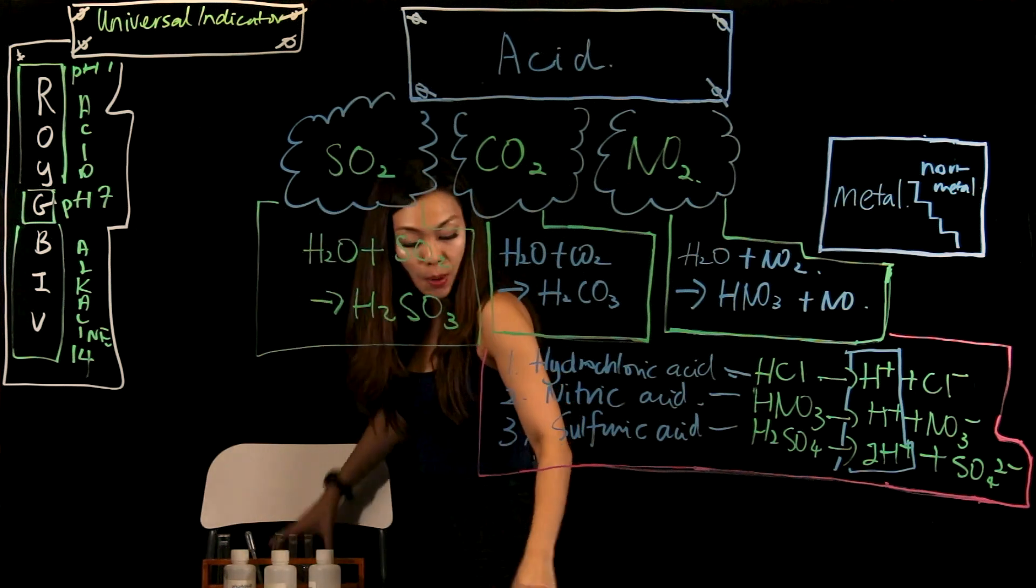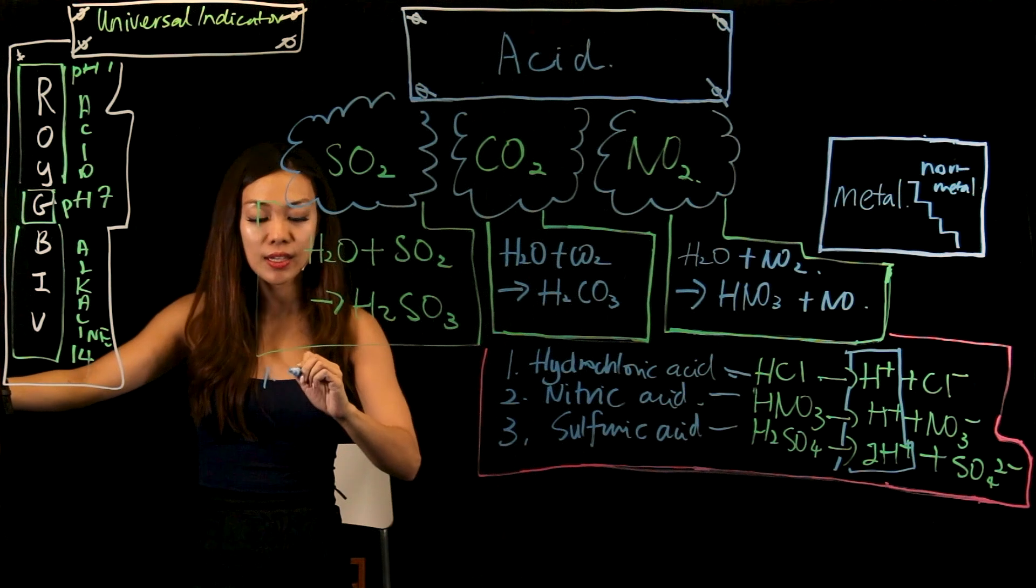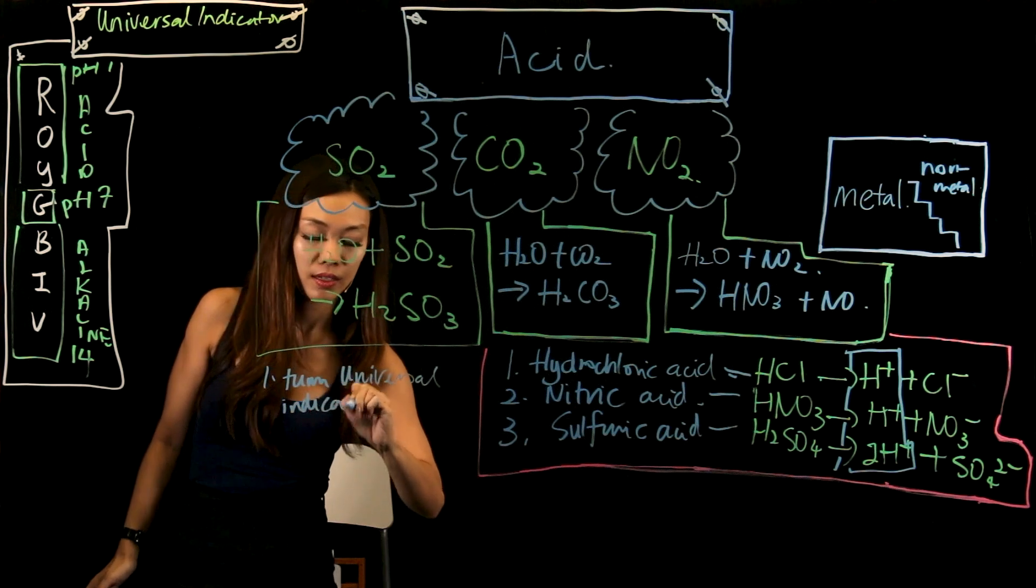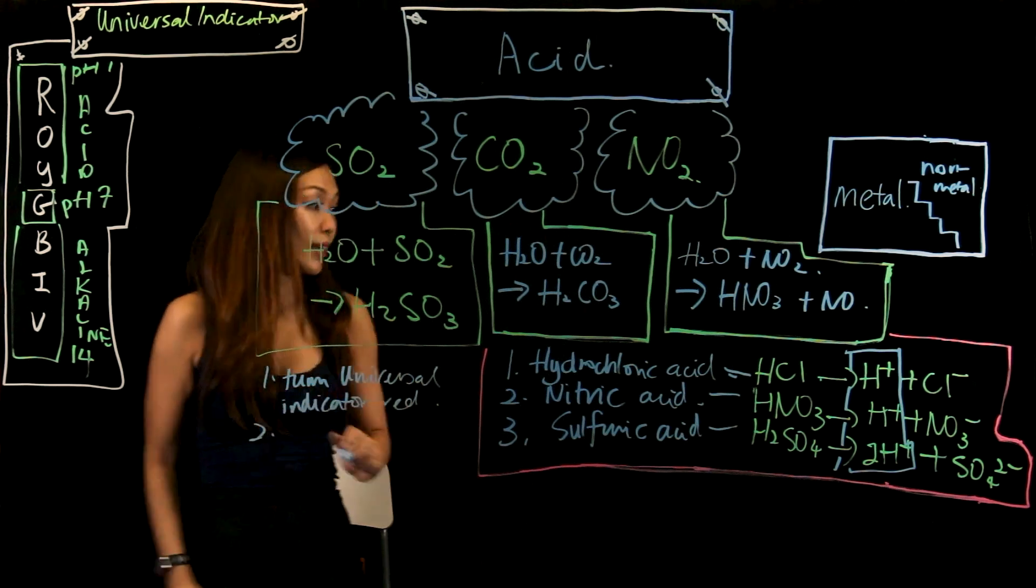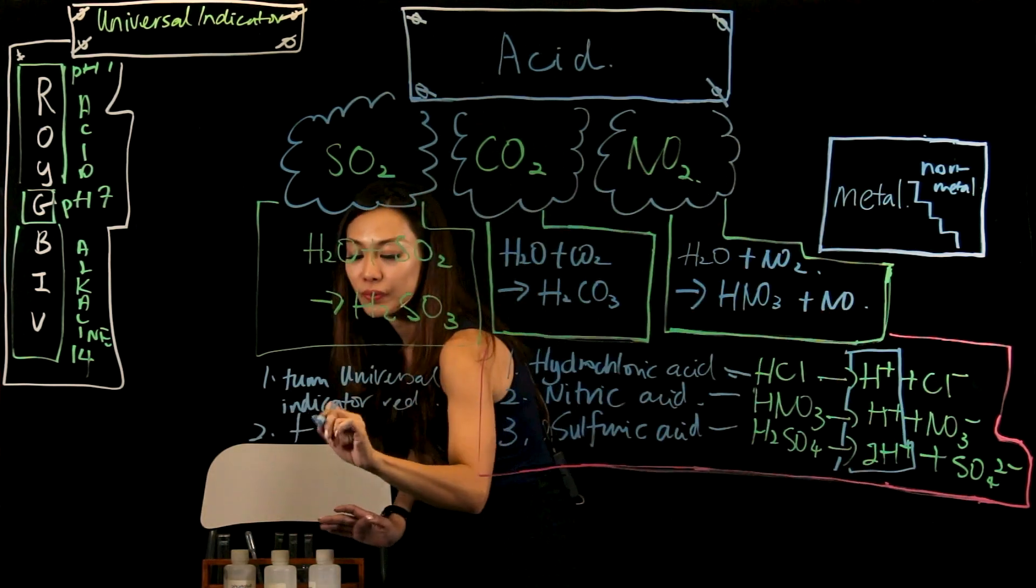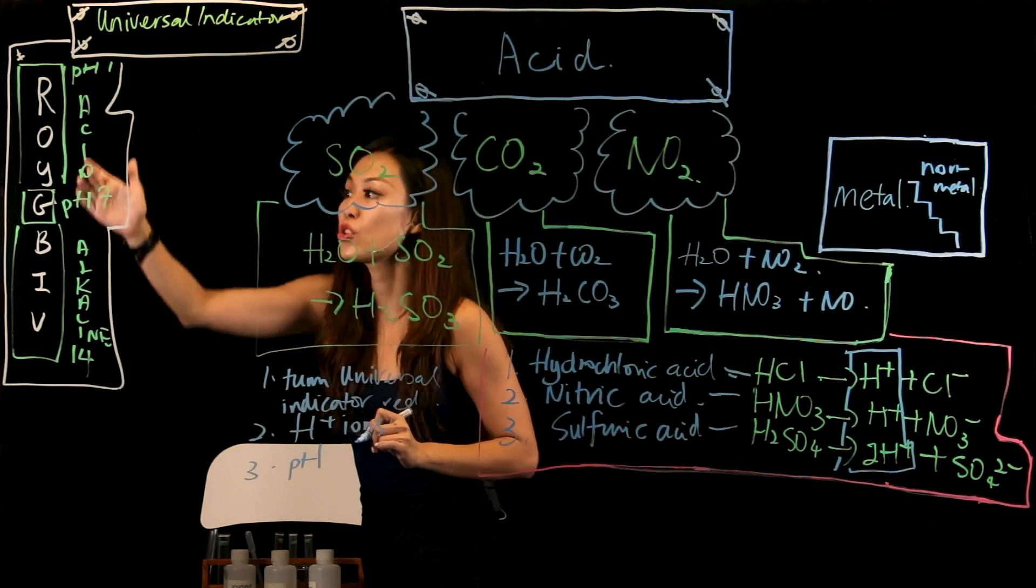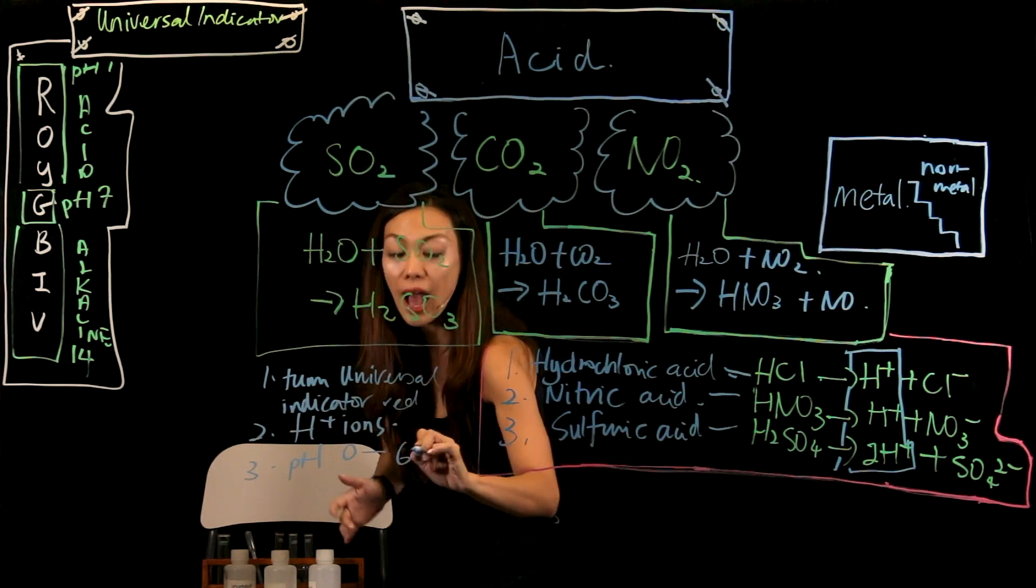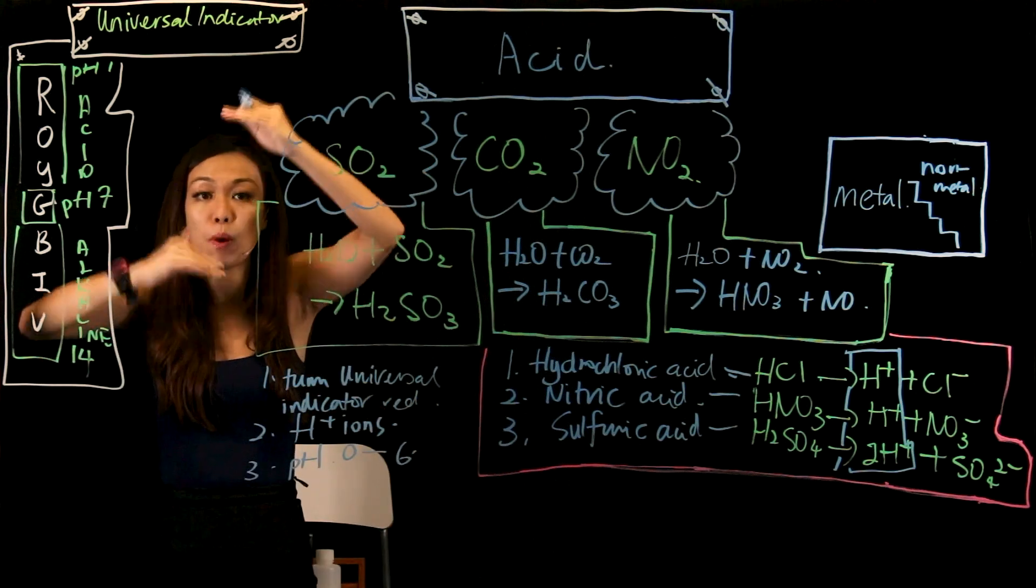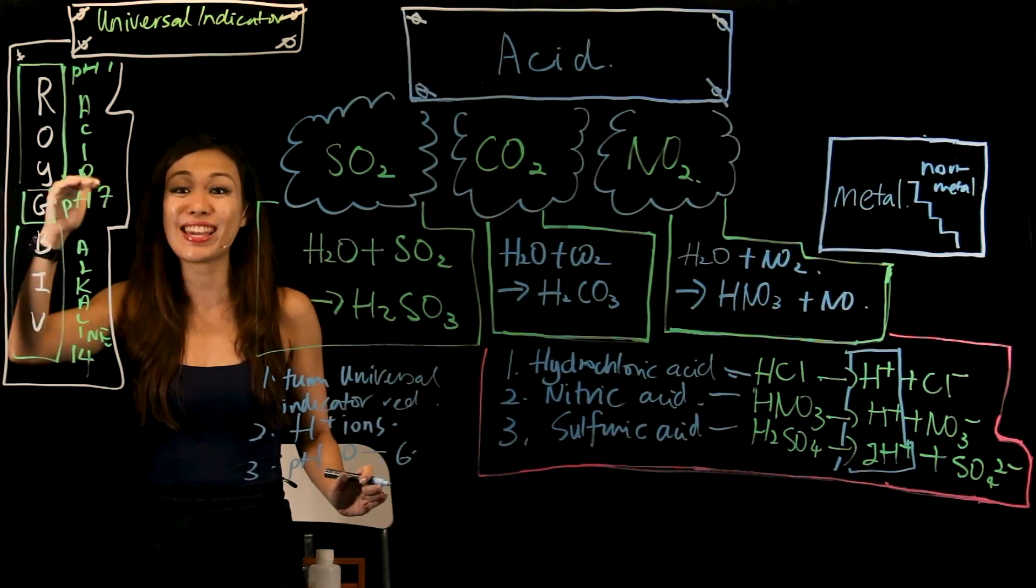So what are the properties of acid, physical properties of acid then? Well, first of them, one of them is they turn universal indicator red. Secondly, can you see over here, they all have what ions? H+ ions. pH range from 0 or 1 to 6. Some of them, some of the scale will give you 0, some of the scale start from 1. But it doesn't matter. It is considered as a strong acid if it's 0 or 1. 6 is the weak acid. 7 is neutral.